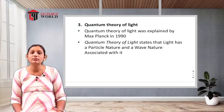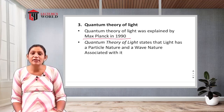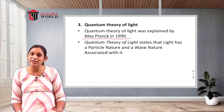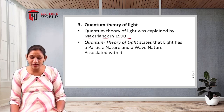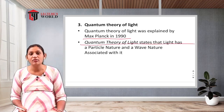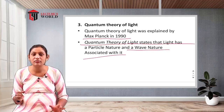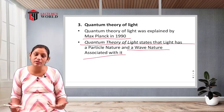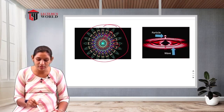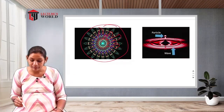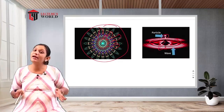The quantum theory of light was proposed by Max Planck in 1919. The quantum theory states that light has both a particle nature and a wave nature which are associated with it. This dual nature — both particle and wave — is the foundation of the quantum theory of light, where energetic particles expand as waves.